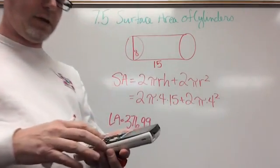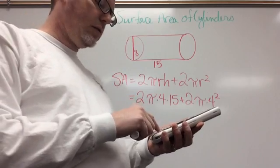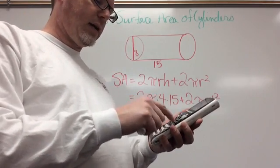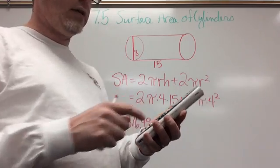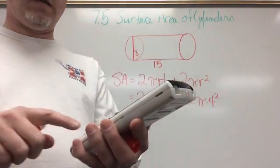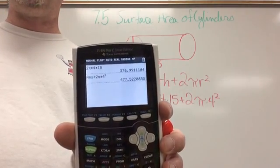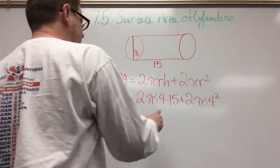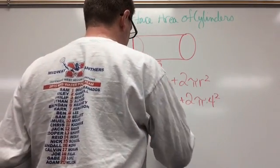And if I keep going, I'm going to do plus 2 times π times R, which is 4 squared, just like that. And I hit enter, and I get 477.52. So the surface area equals 477.52.